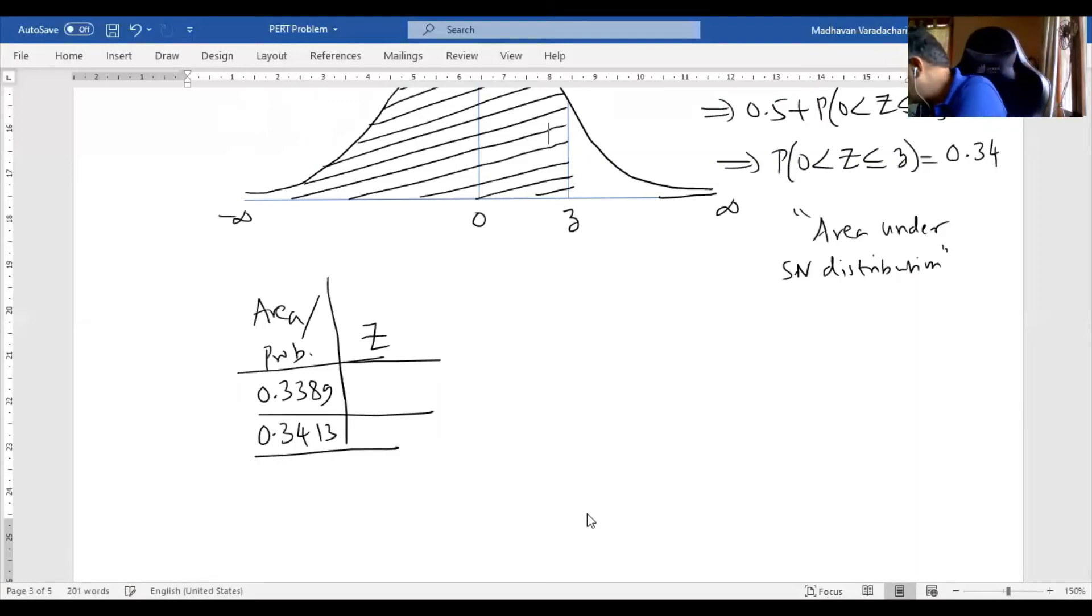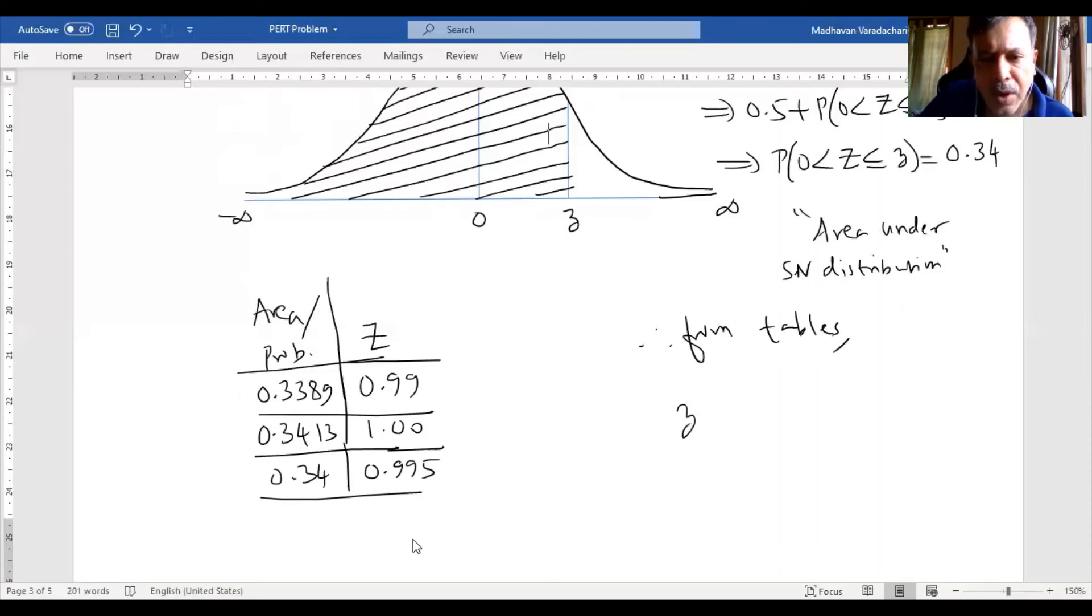The other number is 0.3413. If it is 0.3389, the corresponding z value is 0.99. And this one is 1.00. If I take an average of 0.3389 and 0.3413, I get approximately 0.34. I should take an average of the z values also, which is 0.995. Therefore, from tables, small z value is 0.995.